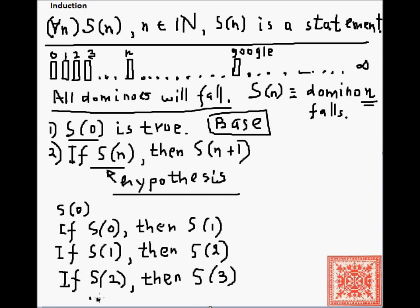And that's when I can conclude that for all n, s(n), domino number n falls, and that is true.